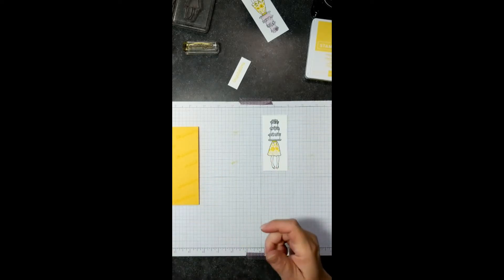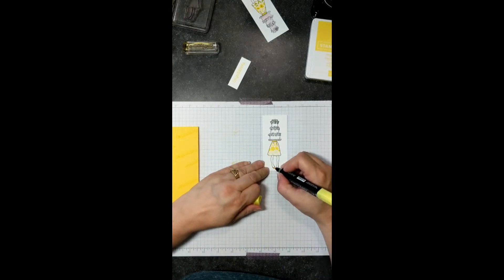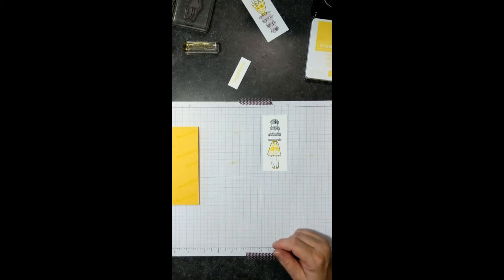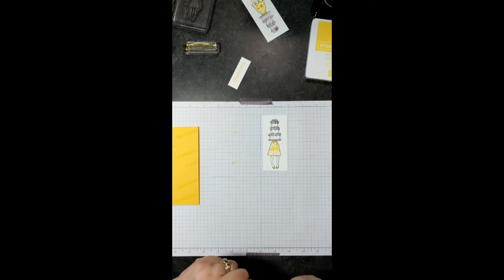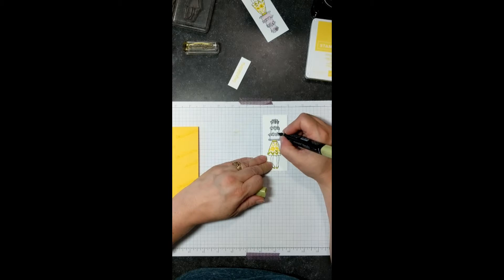And also while we're at it, let's go ahead and give her some yellow shoes just to kind of go with everything that we're doing here. And also simplify it. I mean, you can do whatever you want, obviously. And then... And for the sake of time, we'll come up here and do these leaves as well.